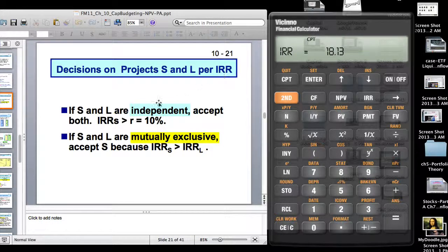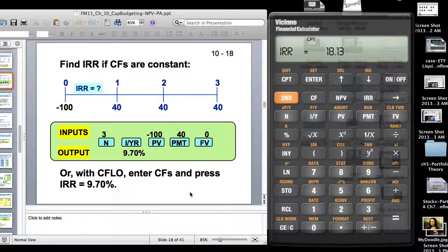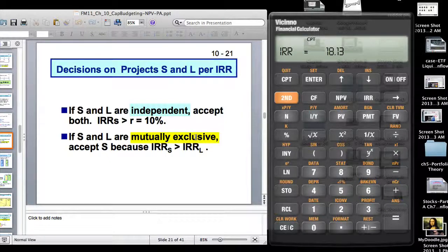When that happens, use NPV. Decisions on project S and L per IRR, S and L are independent. If they're independent, you accept both because your cost of capital is 10 percent and here you got 18 and 23 percent, which is greater than 10 percent. However, if they're mutually exclusive, that means you can only have one. Then you take the one with the higher IRR, which is 23 percent.